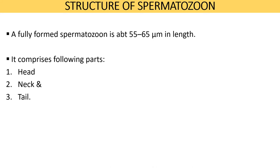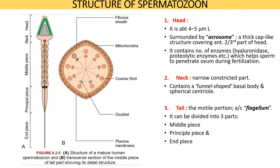A spermatozoan is the singular form of spermatozoa. A fully formed spermatozoan is about 55 to 65 micrometers in length and comprises a head, a neck, and a tail. The head is about four to five micrometers long and is flattened from anterior to posterior. It is surrounded by the acrosome, a thick cap-like structure covering the anterior two-thirds of the head, which contains enzymes — hyaluronidase, proteolytic enzymes, and phosphatases — that help the sperm penetrate the ovum during fertilization. The neck is a narrow constricted part containing a funnel-shaped basal body and a centriole. The tail is the motile portion, also called the flagellum, divided into three parts: a middle piece, principal piece, and end piece.